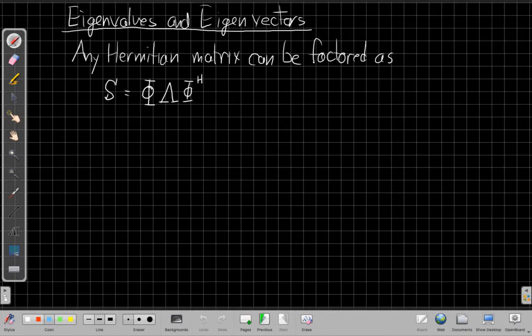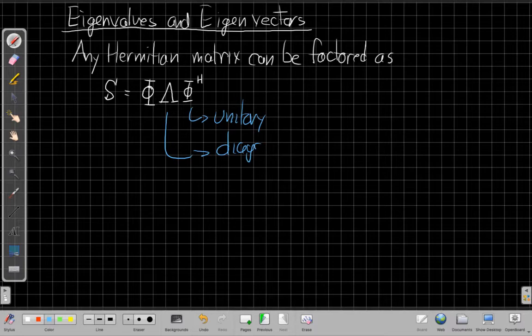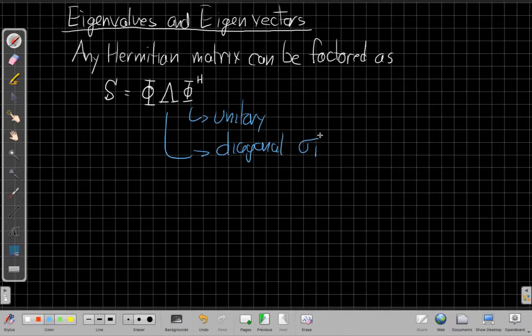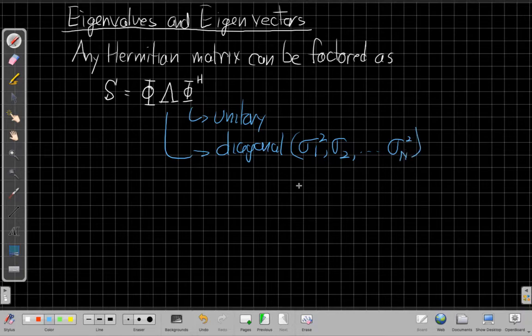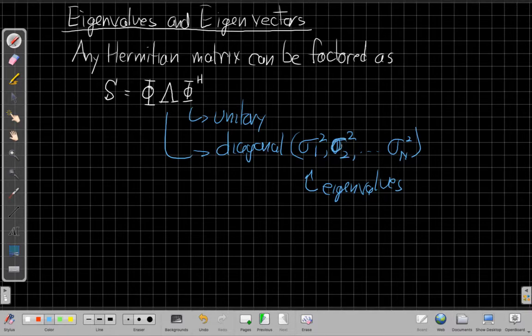Any Hermitian matrix can be written or factored where S is equal to phi times some matrix capital lambda times phi Hermitian, where the phi matrix is a unitary matrix. Then this lambda matrix is actually a diagonal matrix with coordinates sigma_1 squared, sigma_2 squared, up to n. And these are called the eigenvalues. You've probably seen this before in linear algebra or maybe another class. You might want to review this if you're not familiar with eigenvalues and eigenvectors.